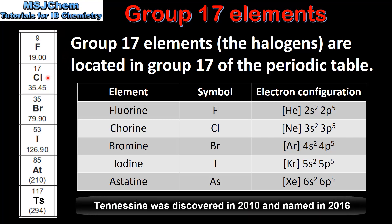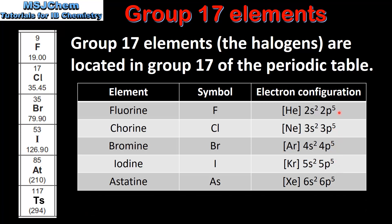They are Fluorine, Chlorine, Bromine, Iodine, Astatine, and Tennessine. In this table we can see the electron configurations of the first 5 elements in group 17. As you can see, they all have 7 electrons in the outer main energy level. They also have 5 electrons in the P sublevel, therefore they are P block elements.